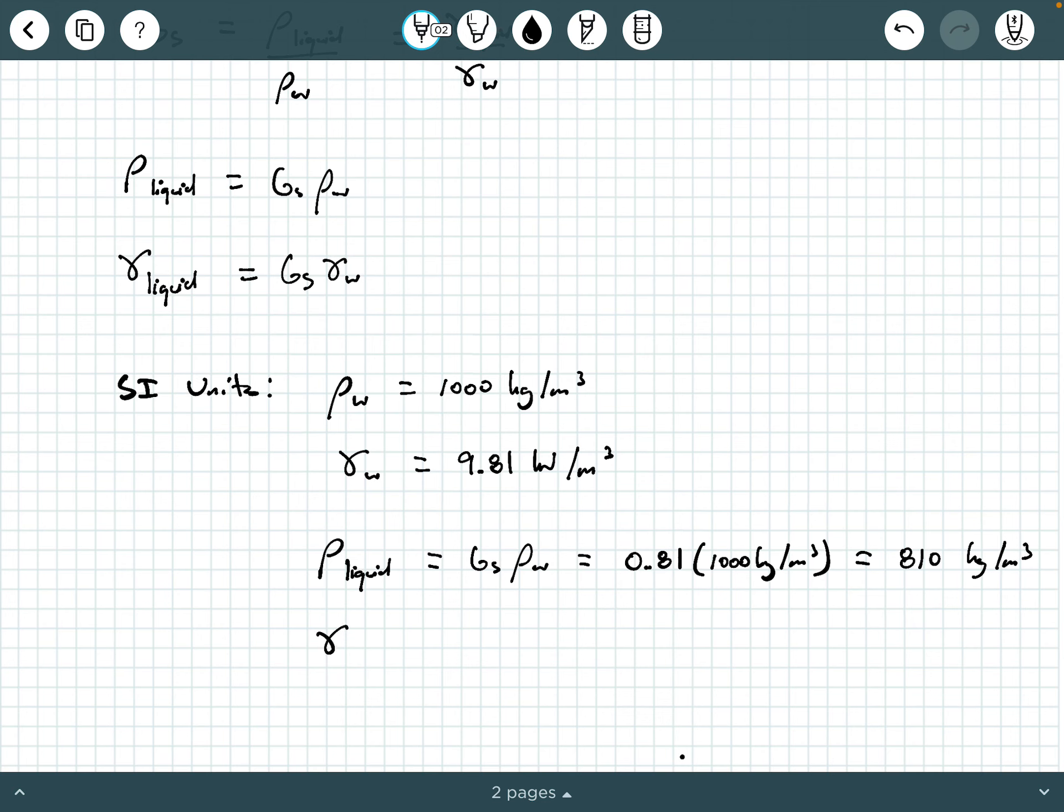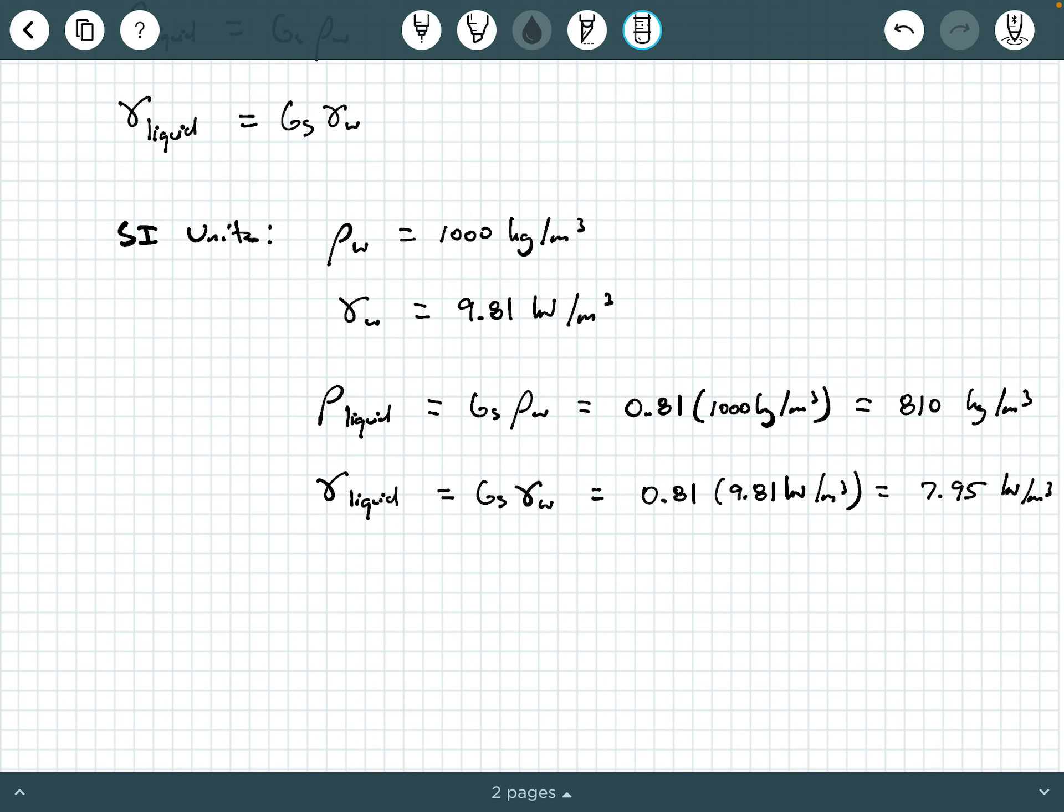Now we need the unit weight of the liquid. And again, we're still under SI units, so we're going to say it's g sub s times the unit weight of water. And so we get 0.81 times 9.81 kilonewtons – watch your units there – kilonewtons per meter cubed. And of course, we get 7.95 kilonewtons per meter cubed. And these are two of our answers.